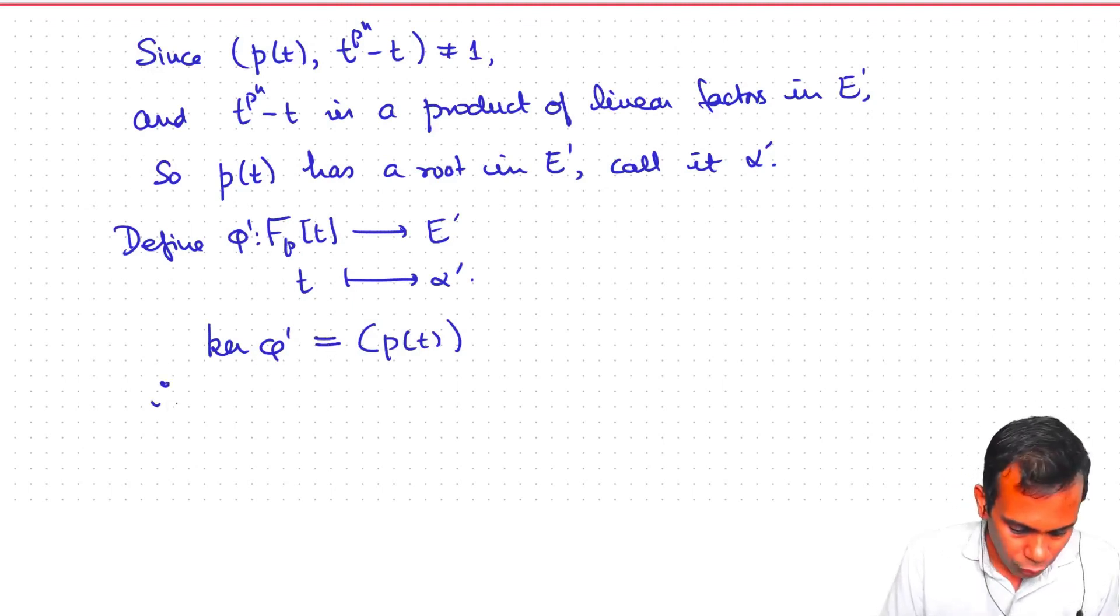And therefore, E prime is also isomorphic to Fp[T] mod Pt.